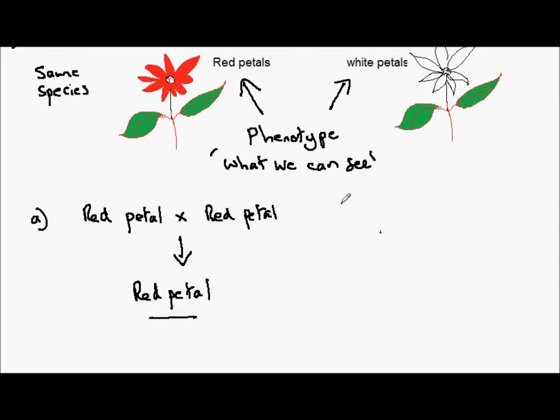If we take a white petal plant and cross this with another white petal plant, we collect the seeds, germinate them, grow them and wait for the flower to appear. It will appear as white petal. The phenotype is white, what it looks like.